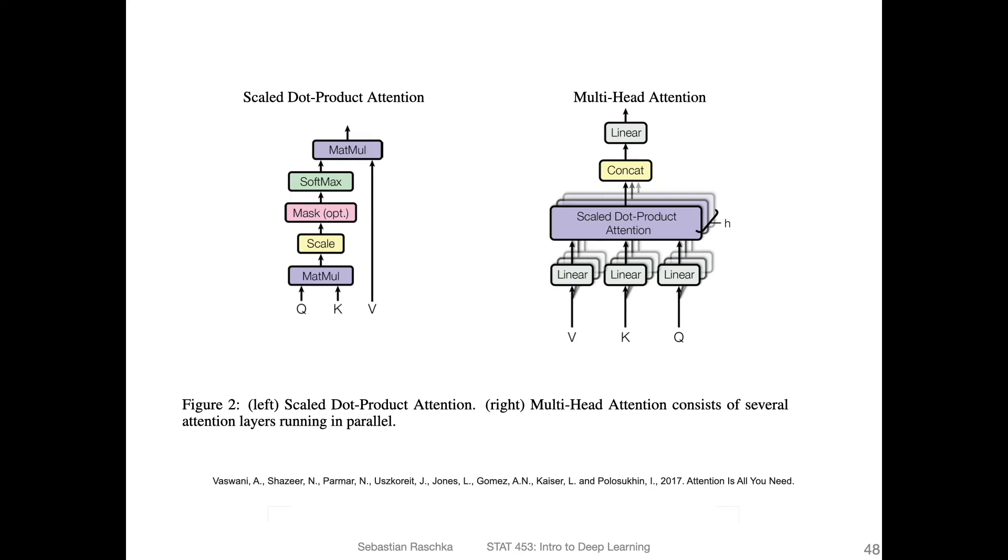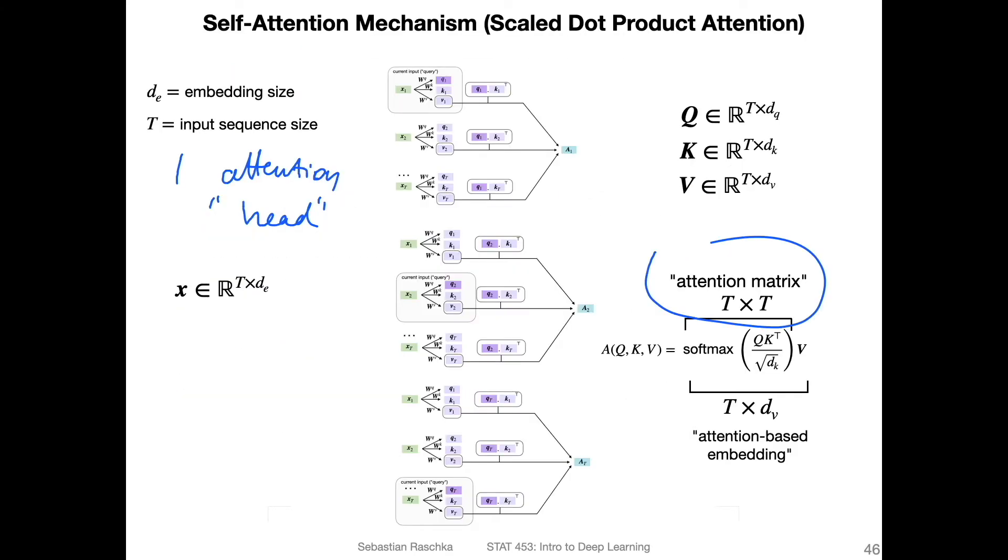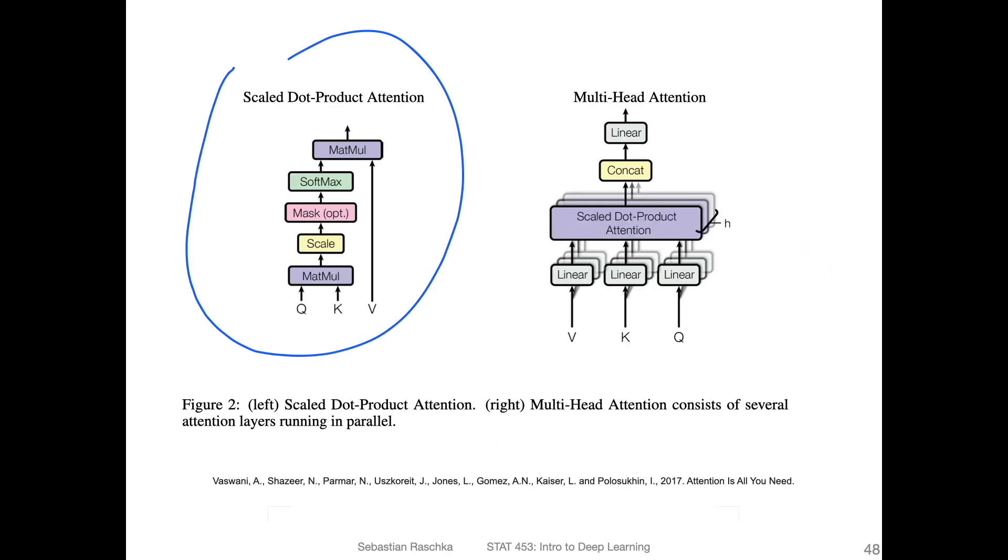So again, this is our scaled dot product attention that we talked about. That's essentially this. And here is the multi-head attention. It's just a screenshot from the original paper. And you can kind of guess what's going on here. So it's summarized. But you can see, this is just stacked. So you have a stacking here.